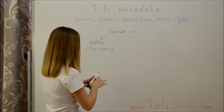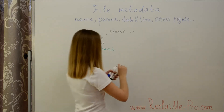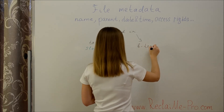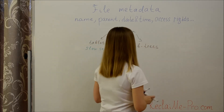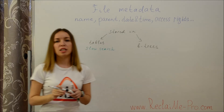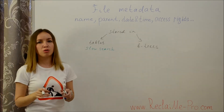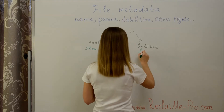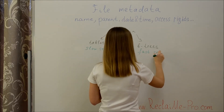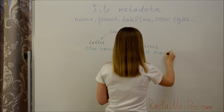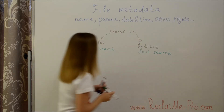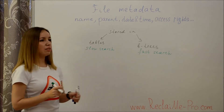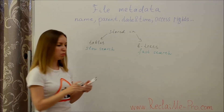Another structure for metadata is a B-tree. B-trees are used for metadata which should be found quickly, enabling fast search. As for the inner organization, tables are significantly simpler than B-trees.